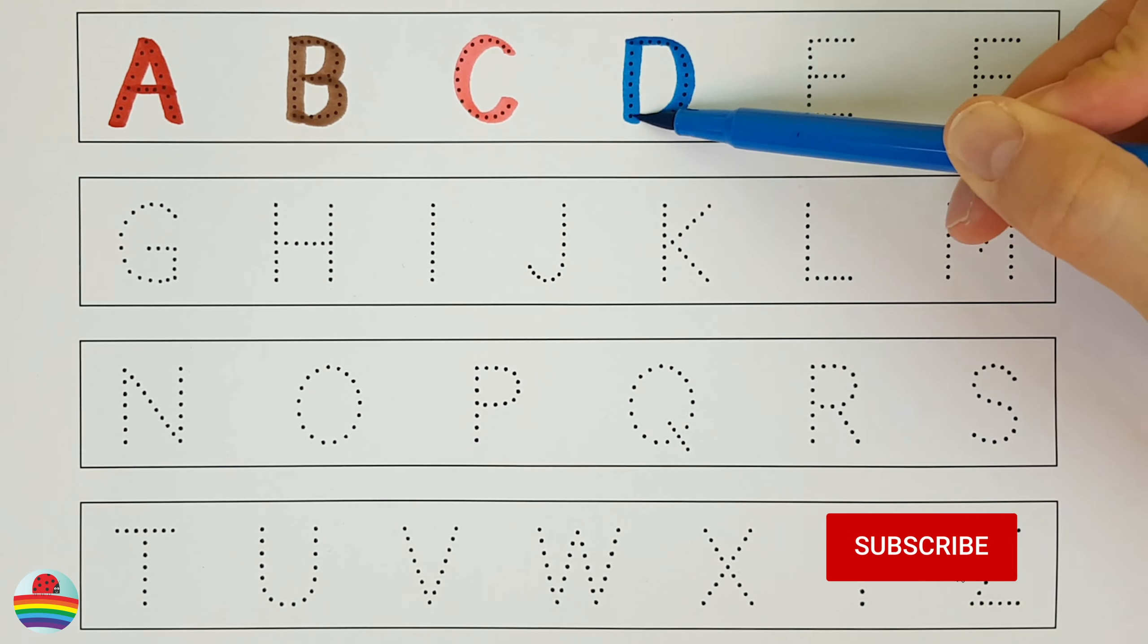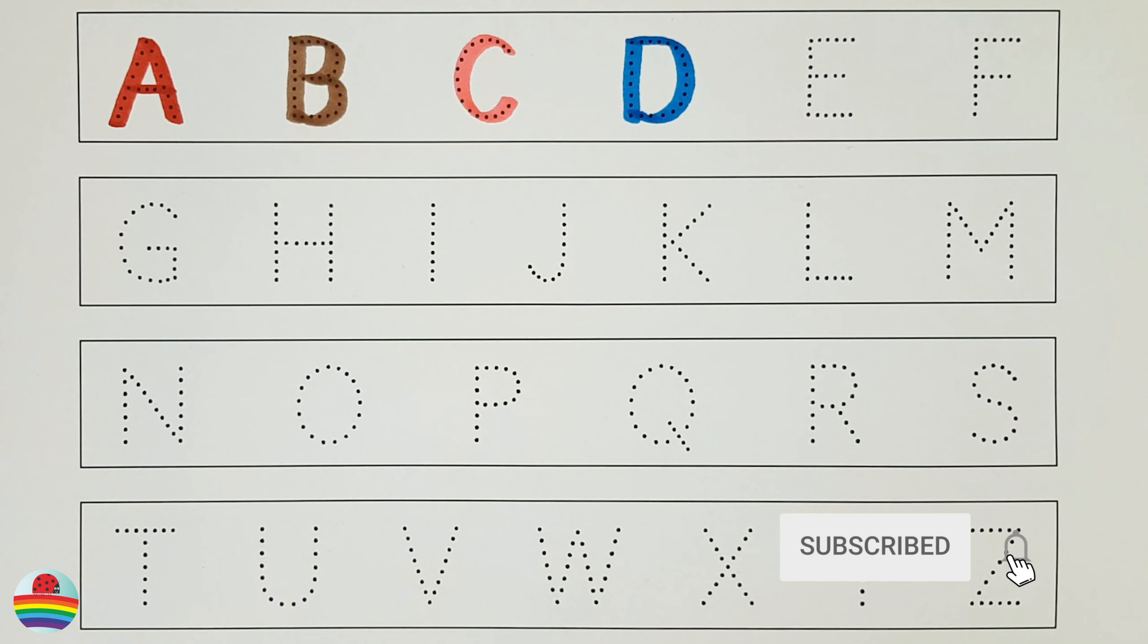D. D is for Dingo. E. E is for Elephant. F. F is for Fox.